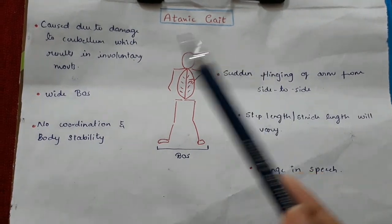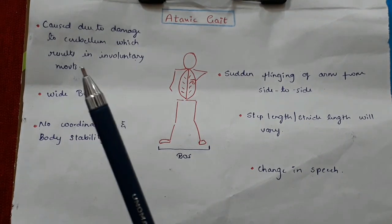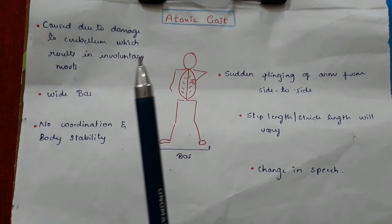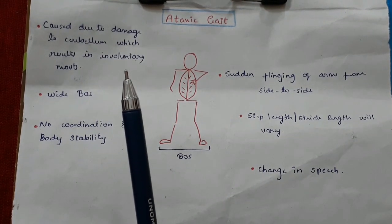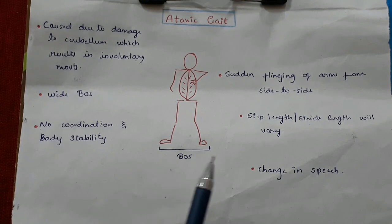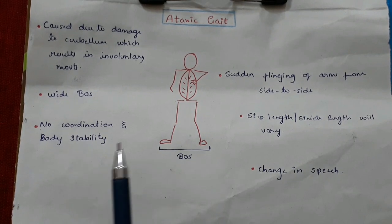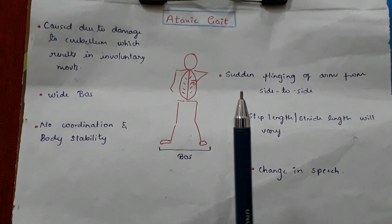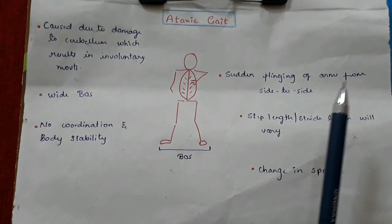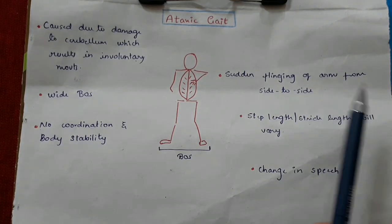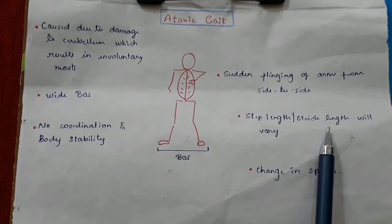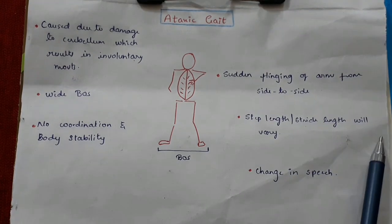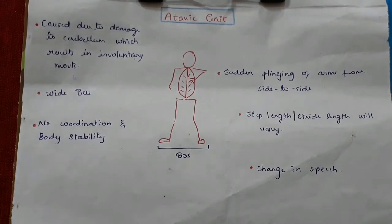Ataxic gait is caused due to damage to the cerebellum, which results in involuntary movements. The patient has a wide base of support, with no coordination and body stability. Sudden flinging of arms from one side to the other is seen. Step length and stride length vary, and there is a change in speech.